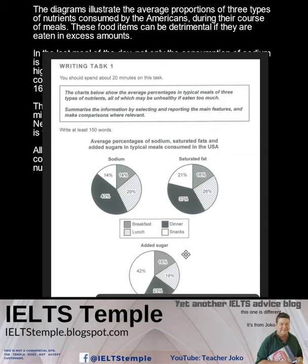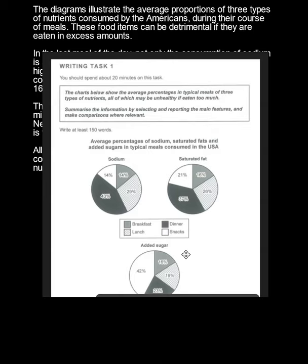What else jumps out? The lunch and breakfast proportions barely change at all across the three graphs. But the biggest variation is in the snacks category. Only 14% of our sodium comes from snacks, but 42% of our added sugar comes from snacks. So what would my overview be? Overall, it can be seen that dinner accounts for the highest percentage of all three nutrients, whereas the biggest variation between meals comes in the form of snacks.